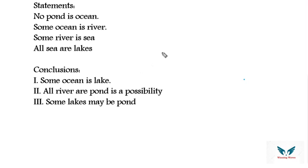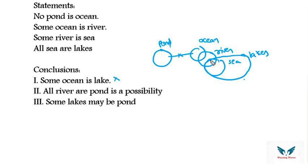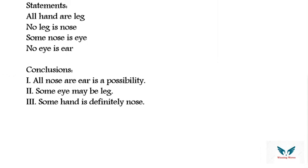Q2: No pond is ocean; some ocean is river; some river is sea; all sea are lakes. Conclusion 1 — some ocean is lake: no connection between ocean and lake, so false. Conclusion 2 — all river are pond is a possibility: pond and ocean have no relation, so this is also false. Conclusion 3 — some lakes may be pond: possibility case, so true. Answer: only conclusion 3 follows.